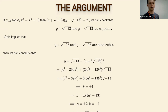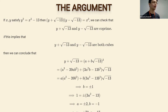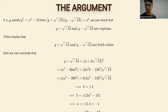If y plus root negative 13 is a cube in this ring — a cube of some a plus b times root negative 13 — you write out what happens when you cube this element. You get something with a factor of three times 13. After some algebra, a factors out on the integer term and b factors out on the imaginary quadratic term. If this equals y plus root negative 13, then b times that quadratic equals one, so b must be plus or minus one.